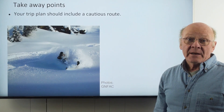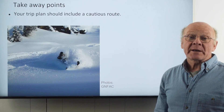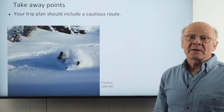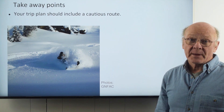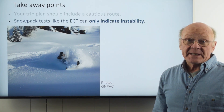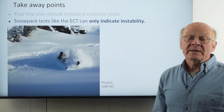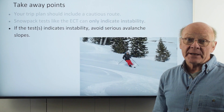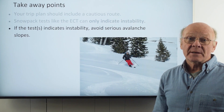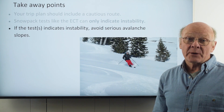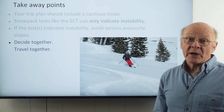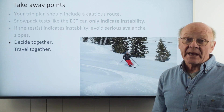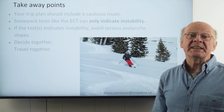Summing up: the trip plan you make with your group should normally include two routes, one of which cautiously avoids serious avalanche slopes. Recognize that snowpack tests like the extended column test can only indicate instability. If any of your tests indicate instability, then avoid serious avalanche slopes — this may mean turning around or switching to the more cautious route in your trip plan. You've chosen to travel together, so you should decide together at each decision point. We welcome your comments on the ideas in this video.